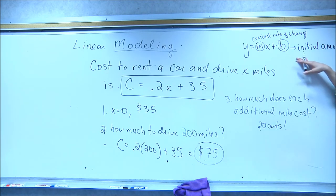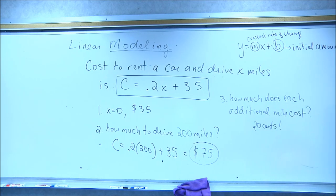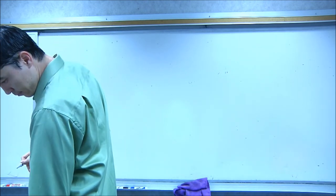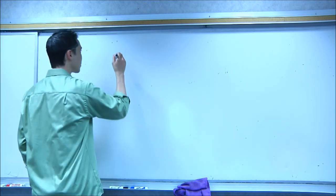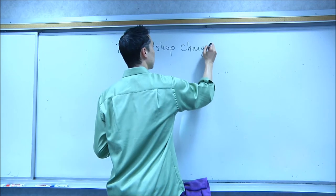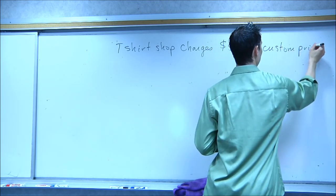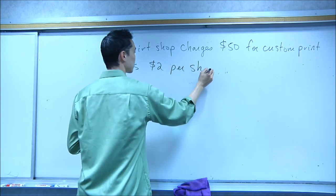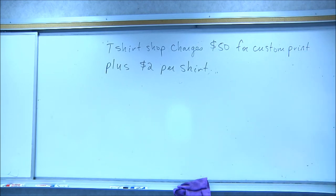So we have our slope-intercept form and now we're transforming it to a real-world model. Let's do another one. A t-shirt shop charges $50 for a custom print plus $2 per shirt that you're going to print.